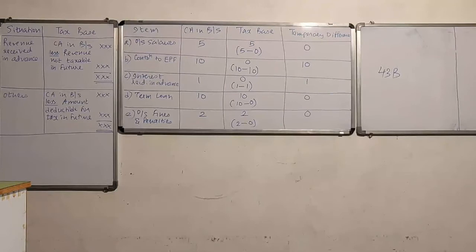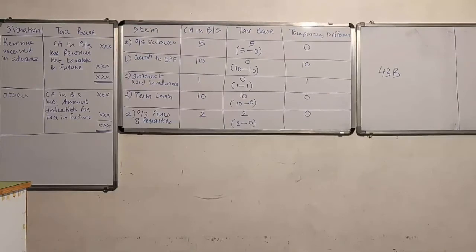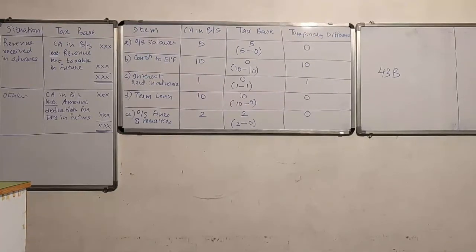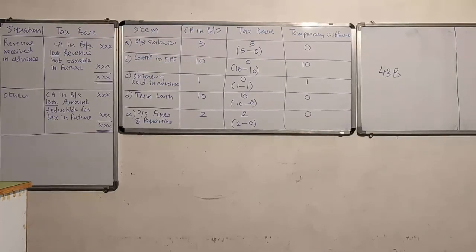In Question 4, similar liabilities are given and we need to work out the carrying amount in the balance sheet and the tax base. I strongly insist that you try Question 4 on your own first. Please pause the video here and solve Question 4 independently before we discuss the solution.